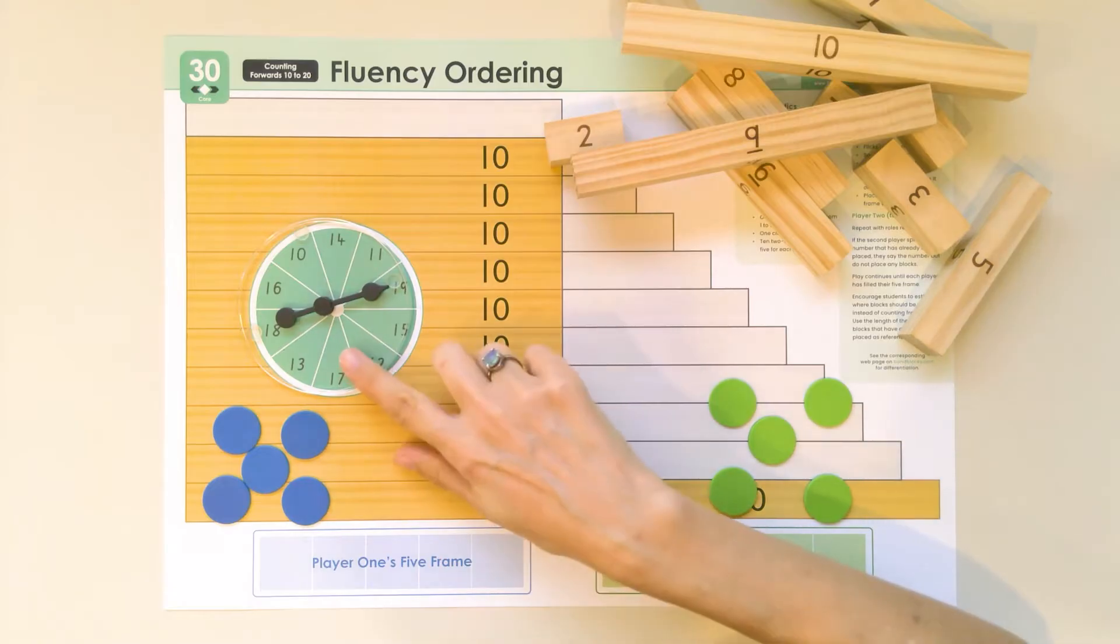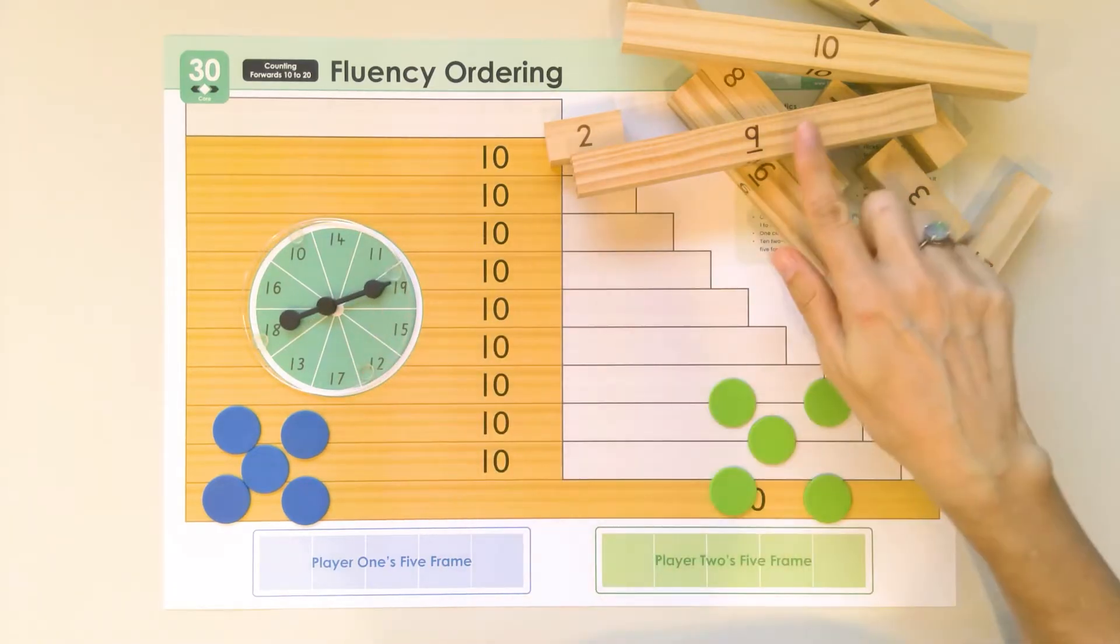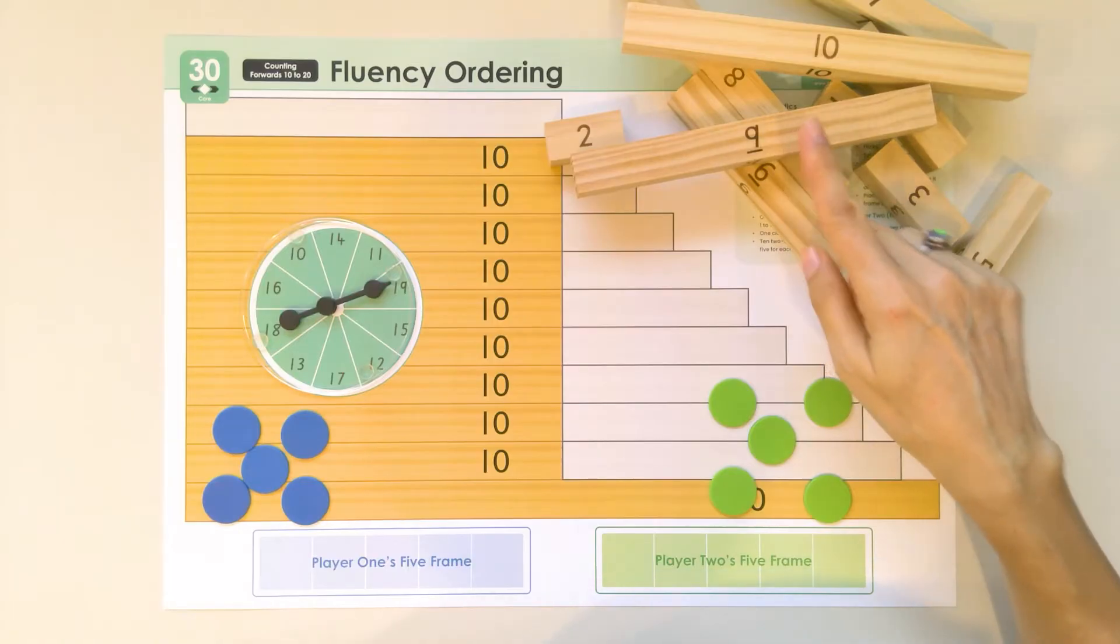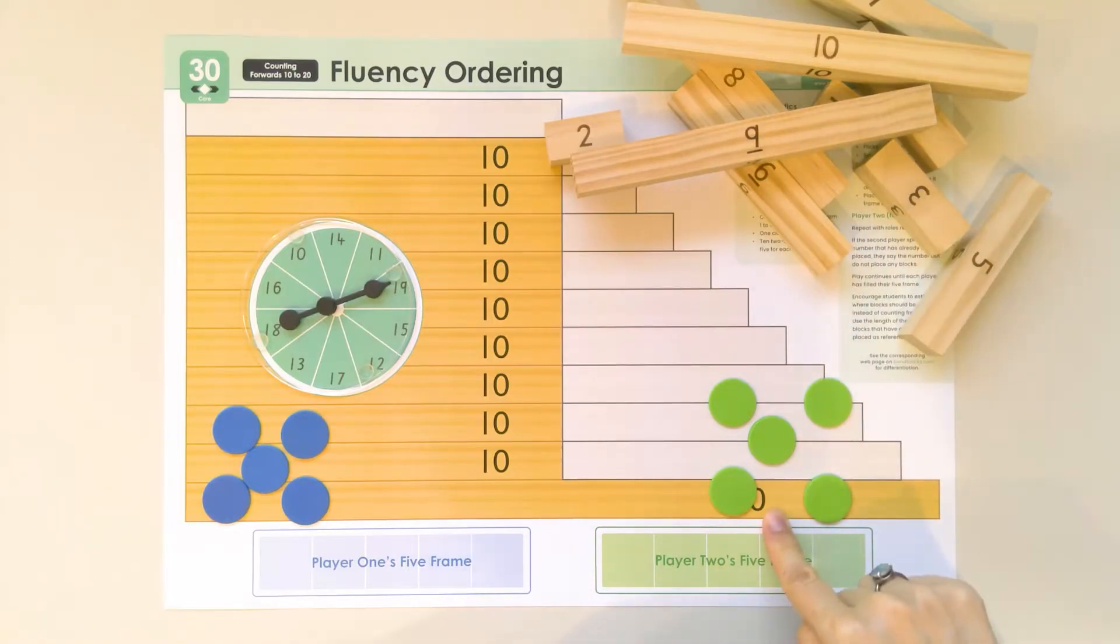To complete this activity you need a spinner, one of each bond block from one to ten in a jumbled pile, and each player needs five counters.